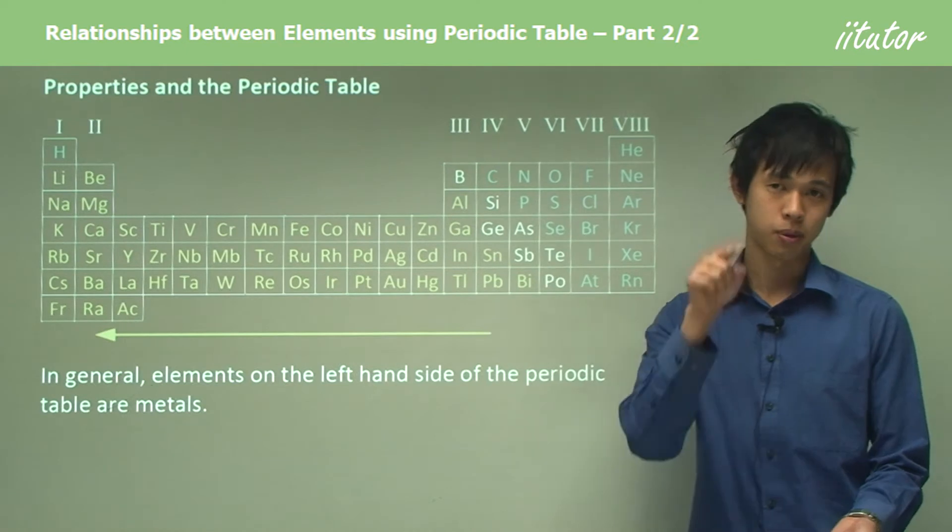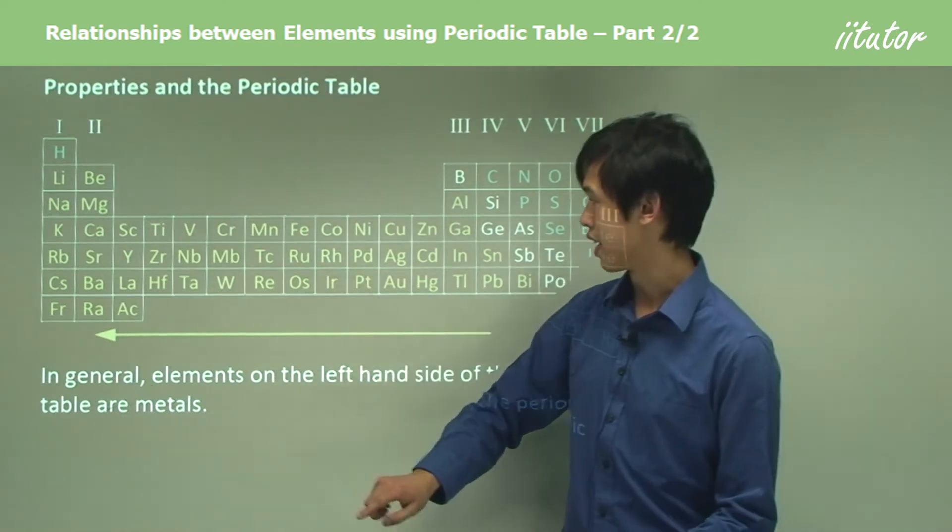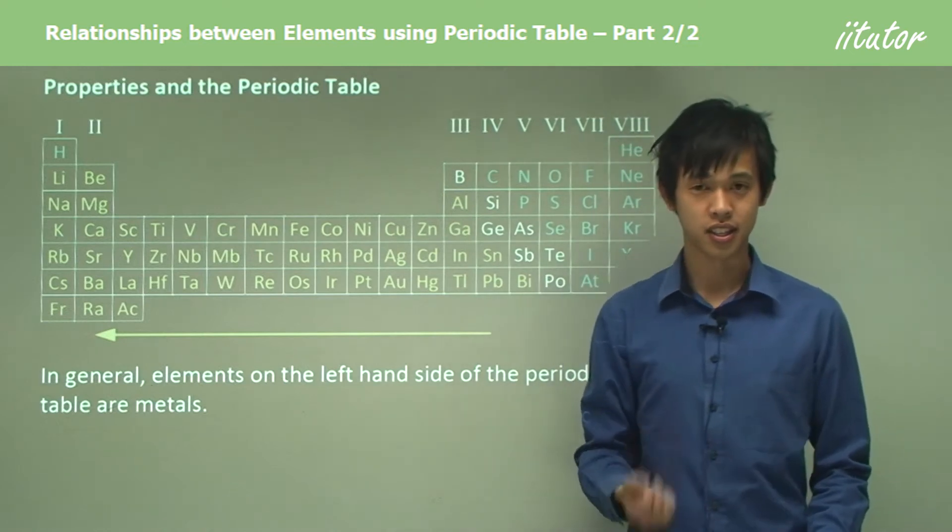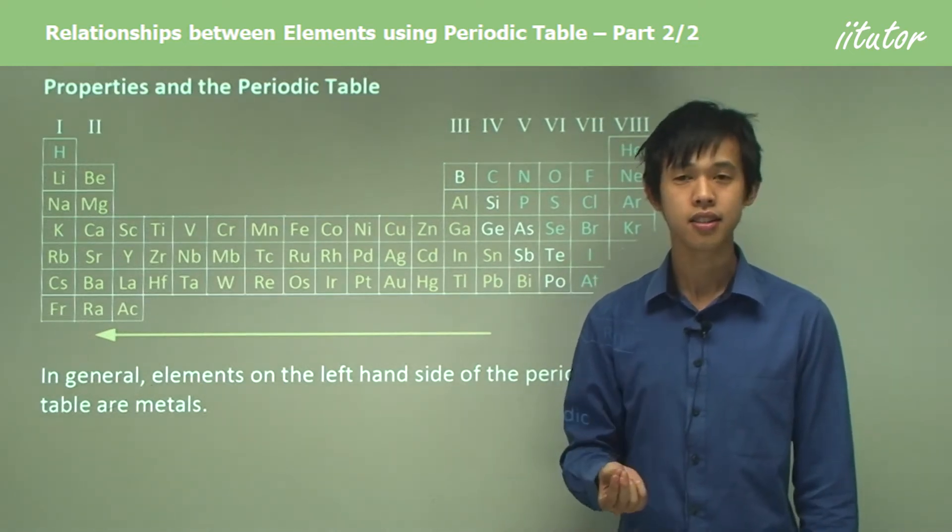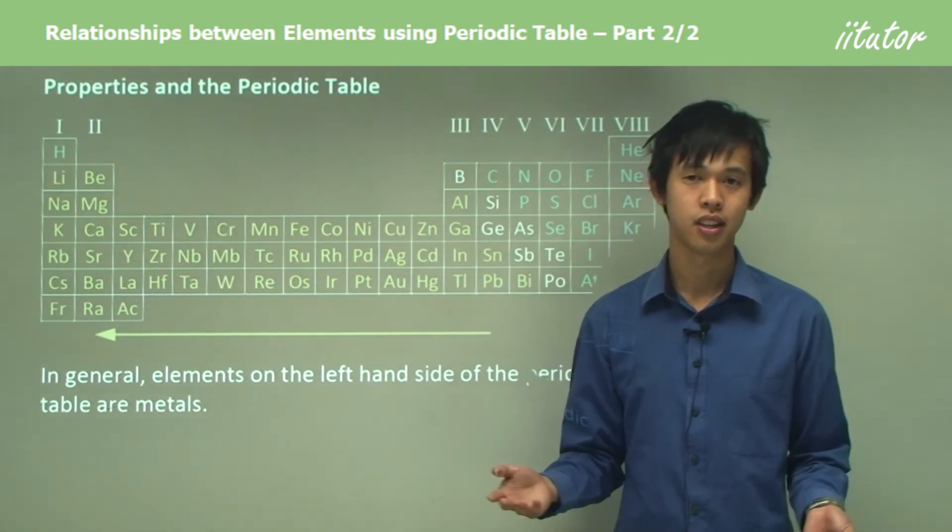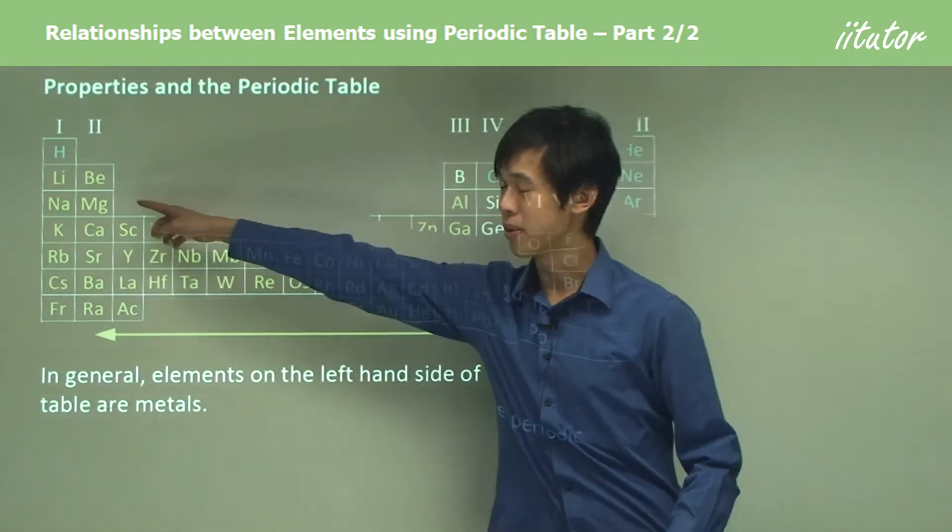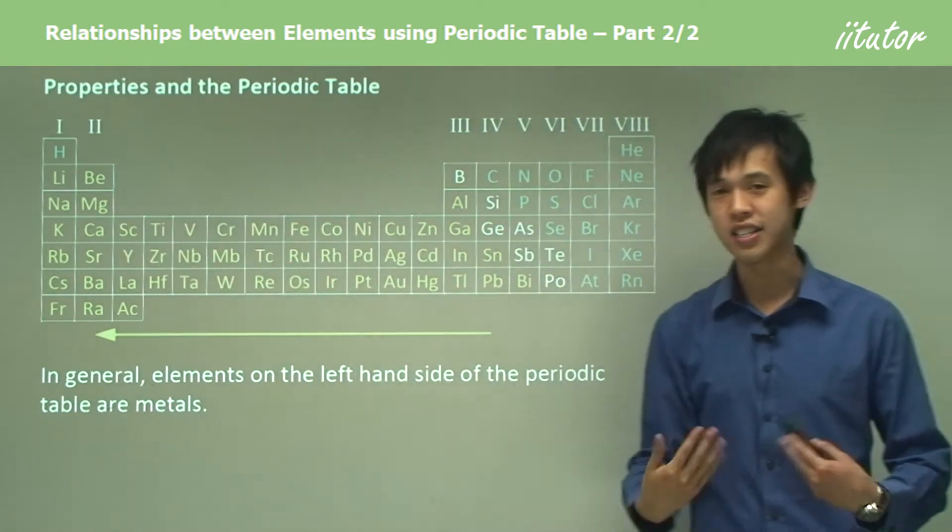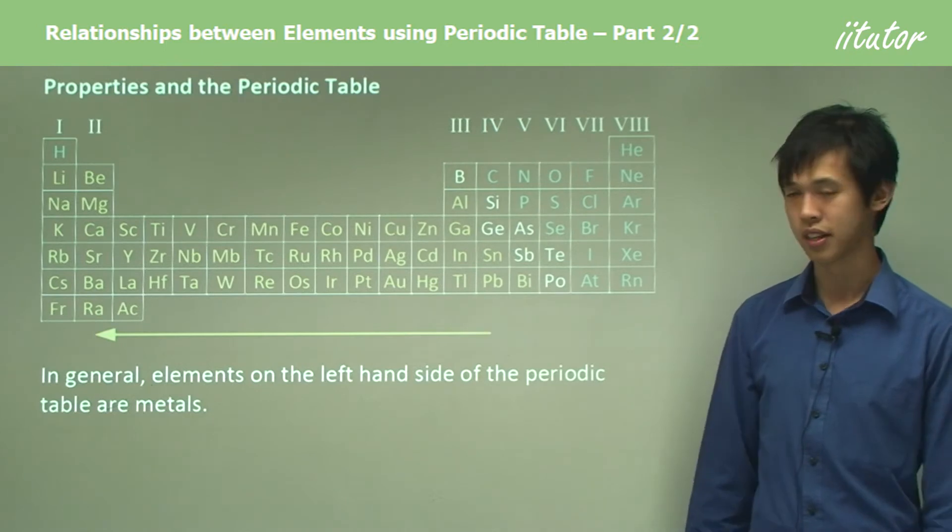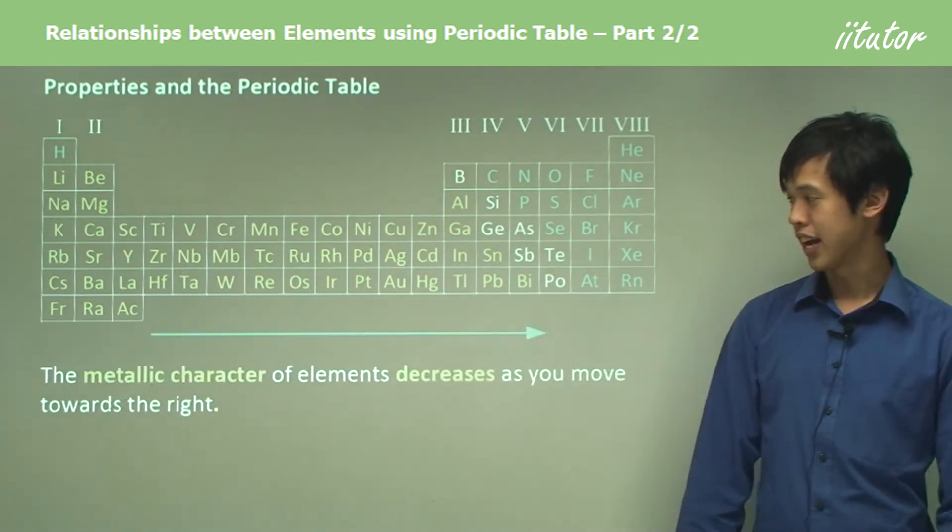If I was to tell someone that elements on the left-hand side of the periodic table are metals and they knew what a metal was, they could go to their periodic table and point out maybe magnesium and say 'I don't know what this is exactly, but I could guess because I know what a metal is that it's probably a good electrical conductor.' Because they know it's on the left, they instantly know its properties because they know it's a metal.